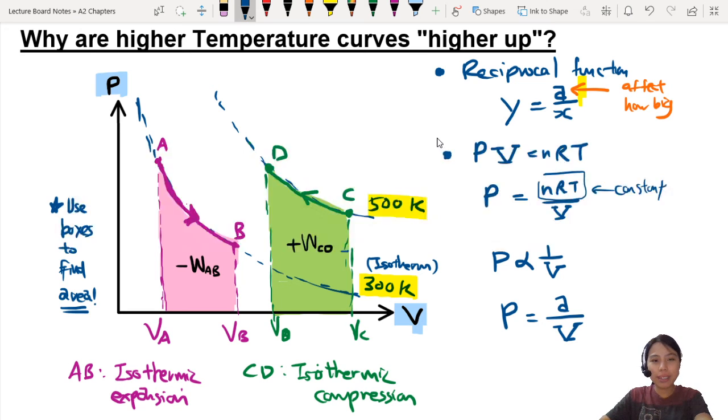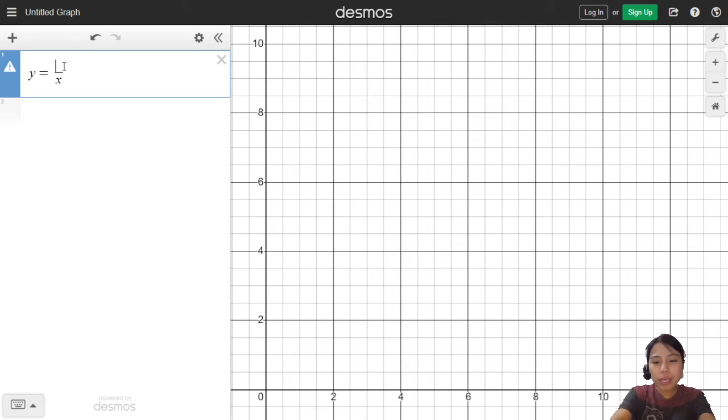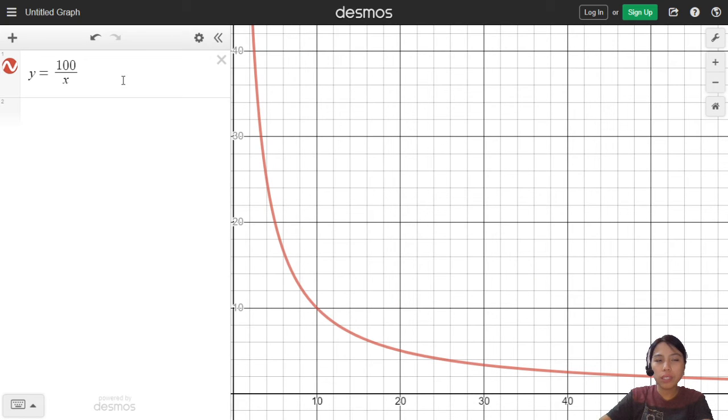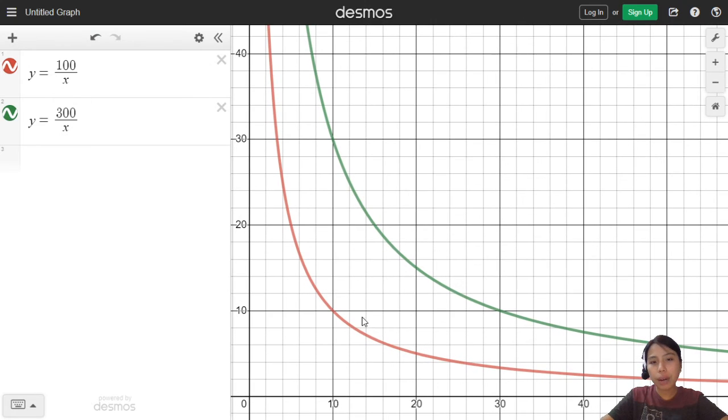So going back to the animation just now, I can say, maybe this one is PV. This is 100. Whatever this. All the constants multiplied together get a value of 100. Maybe. And if I compare that with something larger, a larger temperature, for example, 300 over X. There. Then you would see how this reciprocal curve behaves.